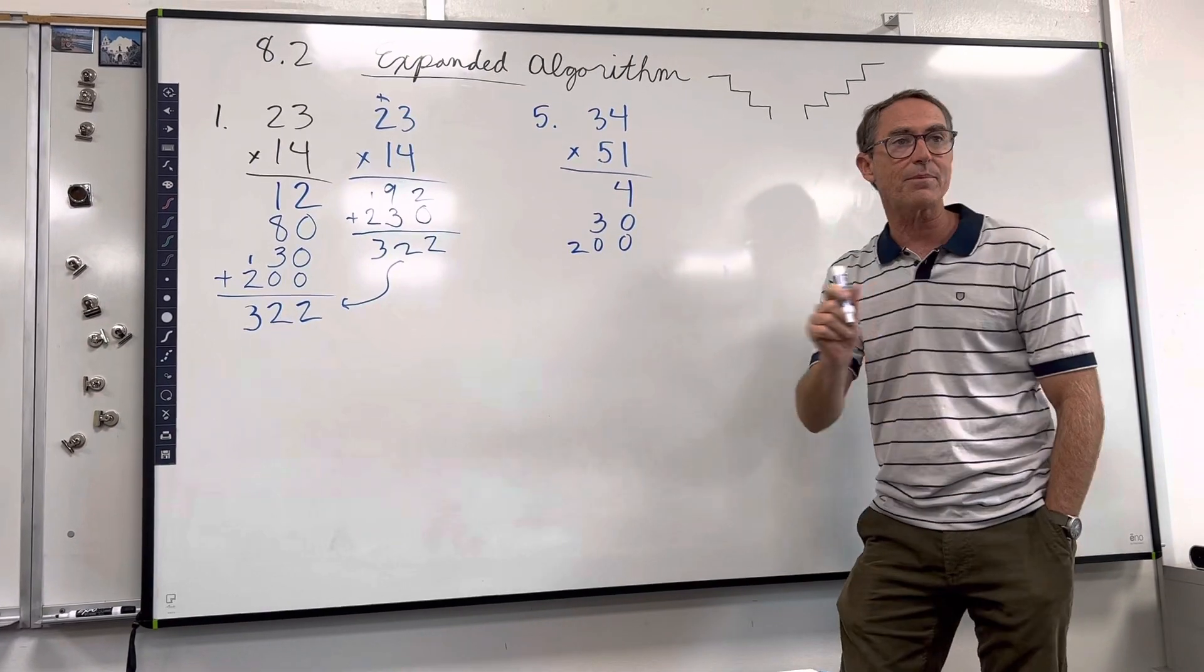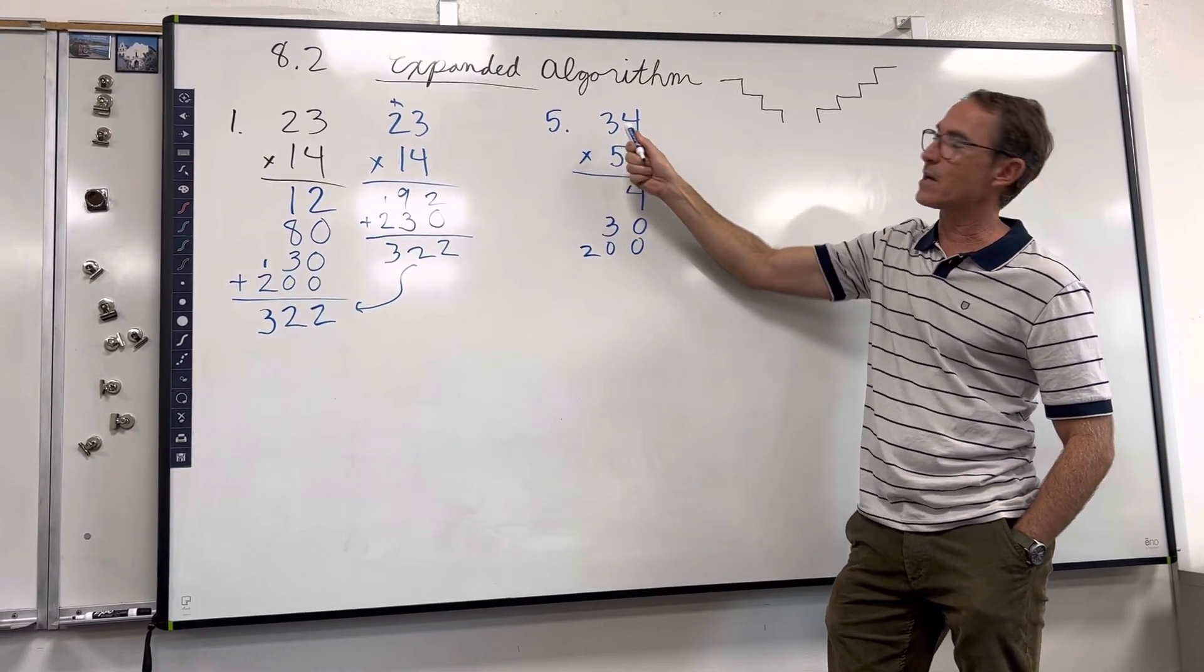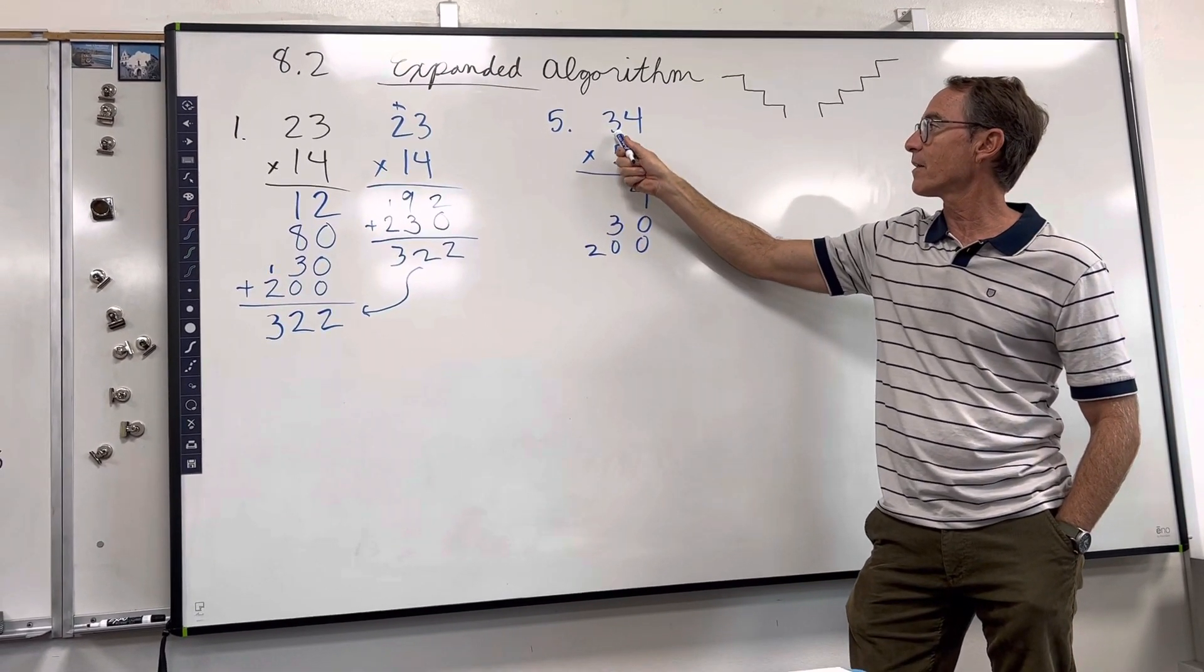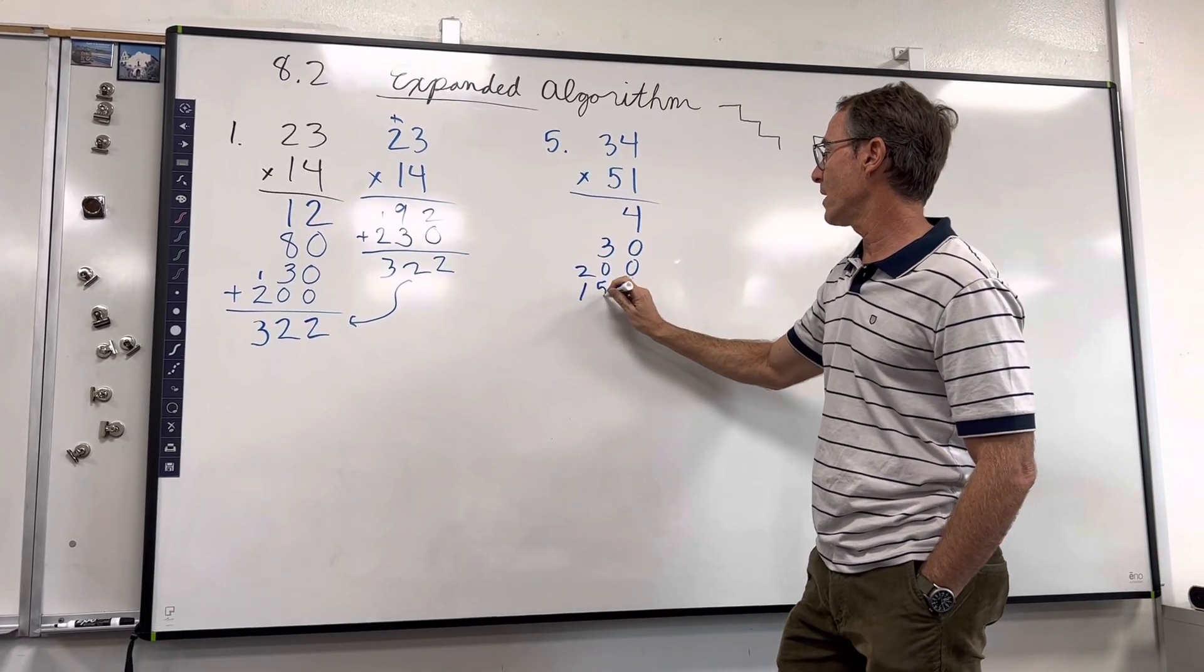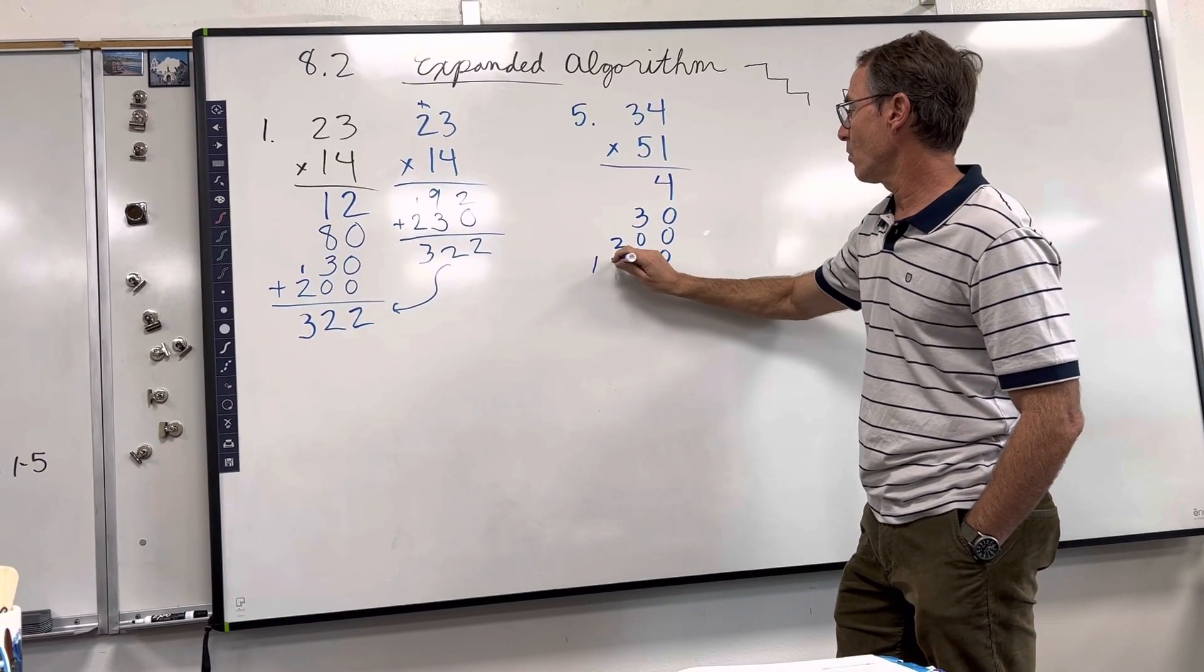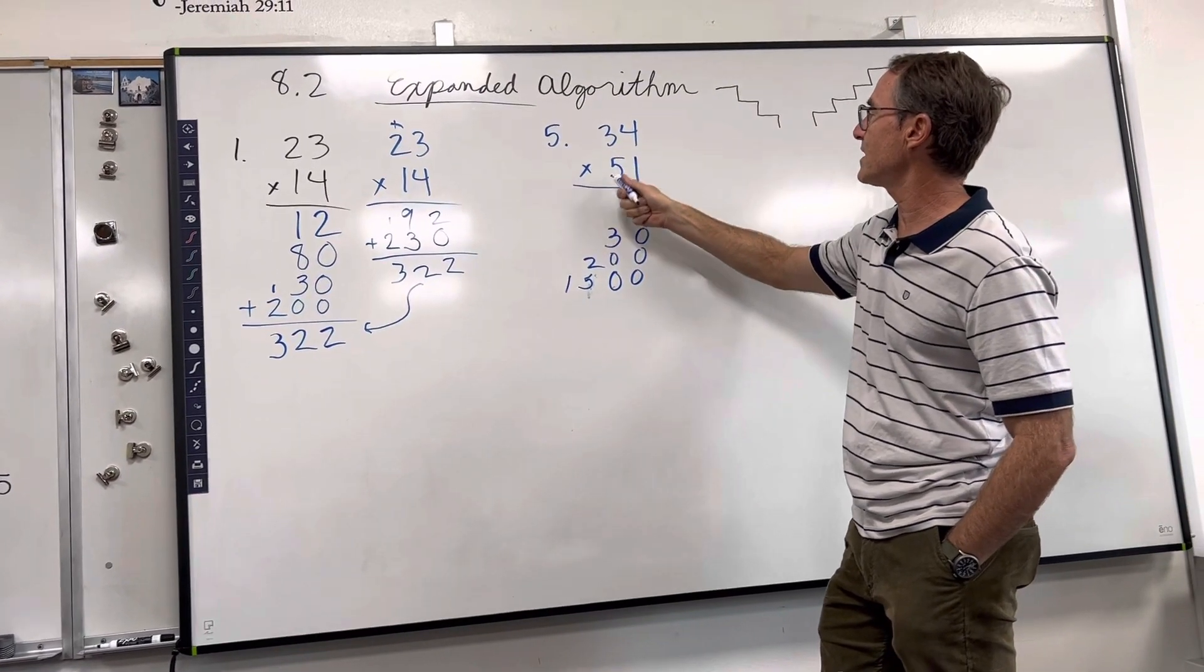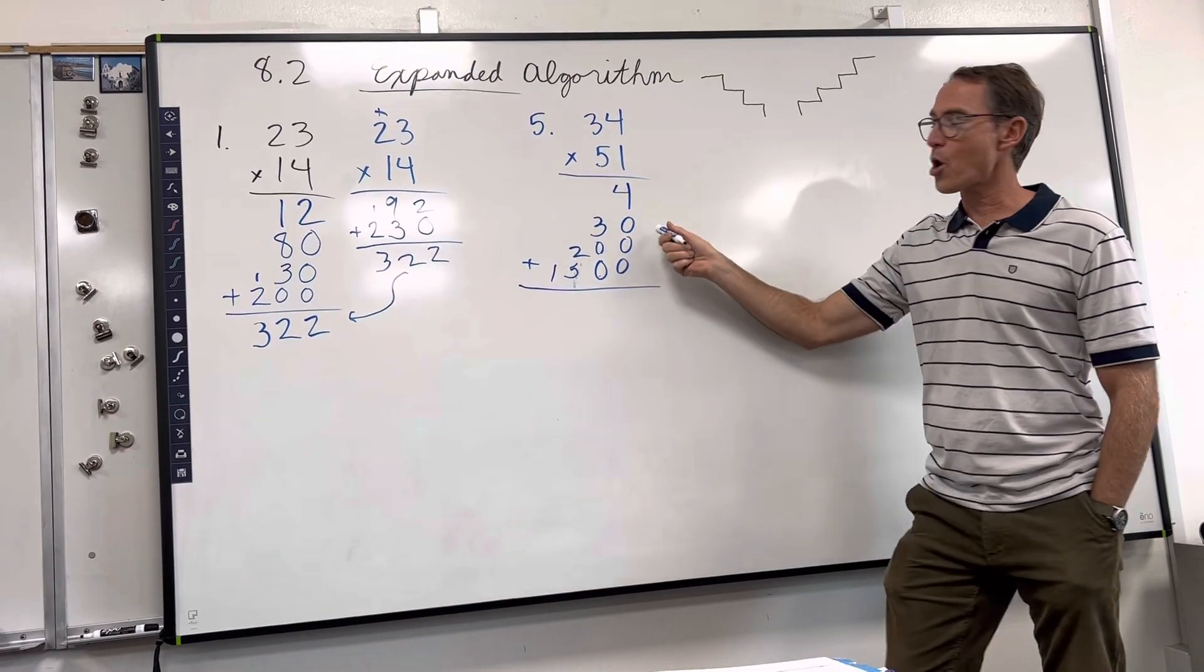And we're not done because we got one more step in the expanded algorithm, which is actually—we used to say 5 times 3—but today's lesson is actually 50 times what? 30. Good. Which is what? 1500, right? Oh no, excuse me, I was off there by a zero. 1500, because 3 times 5 is 15, and then add those two zeros.